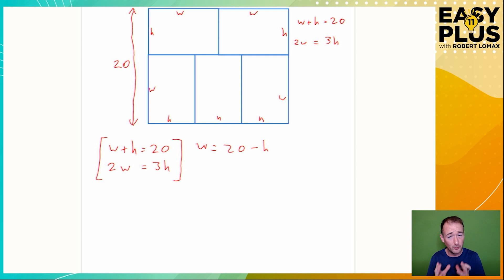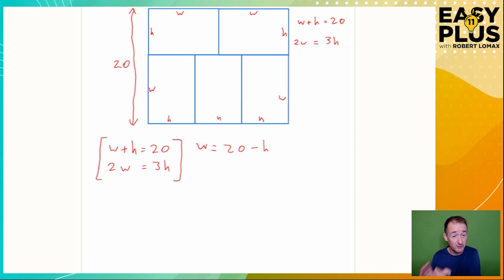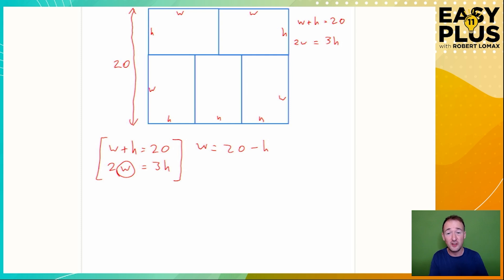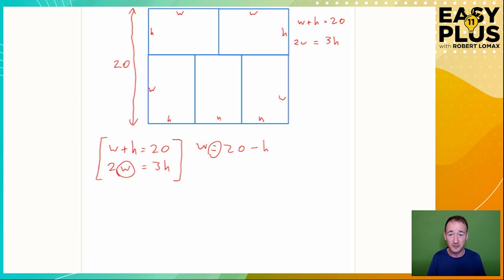Another way of putting that is that we've subtracted H from both sides of the equals sign. Remember, everything you do, you have to do to both sides. That's got rid of the H on the left, and added a minus H on the right. Now, if we know that W is the same as 20 minus H, that means in the second equation we can write 20 minus H instead of W, because an equals sign means 'is the same as' — you can just swap these two things.